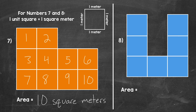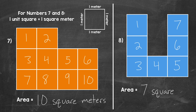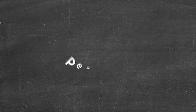Let's move on to number eight and see what the area of this shape is. We have one, two, three, four, five, six, seven square meters here. So the area of this shape is seven square meters. So there you have it — that's how to find area by counting unit squares. I hope that helped. Thanks so much for watching. Until next time, peace.